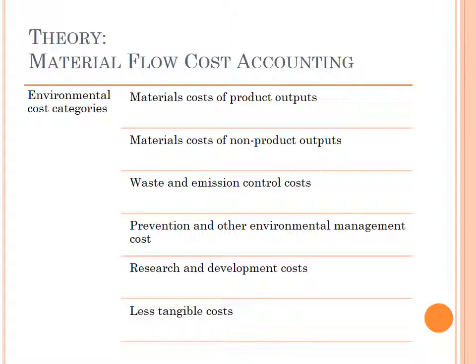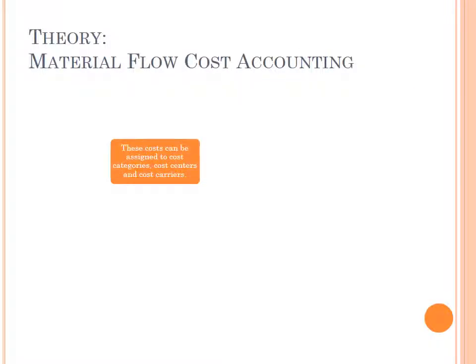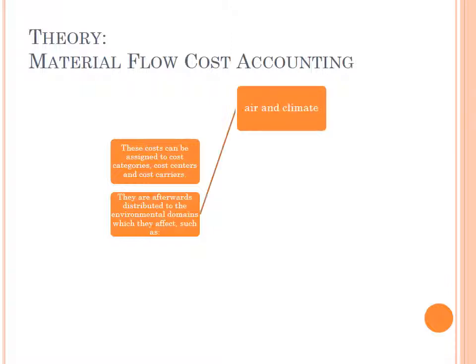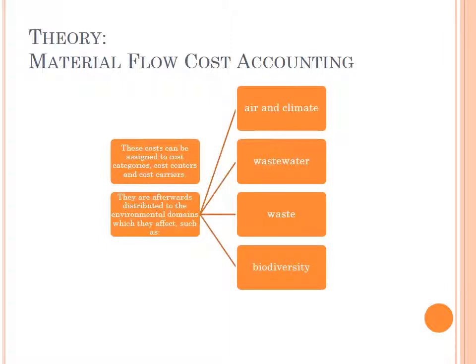There are also less tangible costs. These costs can be assigned to cost categories, cost centers and cost drivers. They are afterwards distributed to the environmental domains which may be affected, such as air and climate, wastewater, waste, biodiversity, and soil and ground.